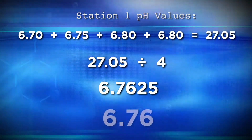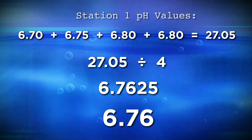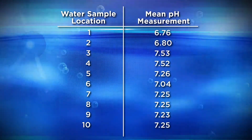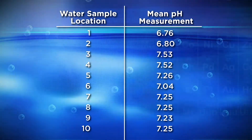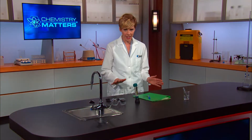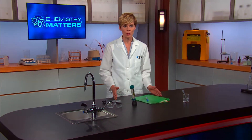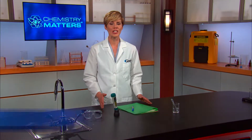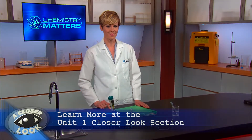We'll report it as 6.76. This pH value is listed to only two decimal places because of the significant figures. Significant figures represent the precision of a measurement. If we calculate the average pH value at all ten stations and list them in a new data table, it'll look like this. Significant figures are extremely useful for getting a handle on very specific numbers. If you haven't studied significant figures yet, or just want to get a better handle on them, you can check out the closer look section for unit one. Okay, I now return you to our classroom lab already in progress.